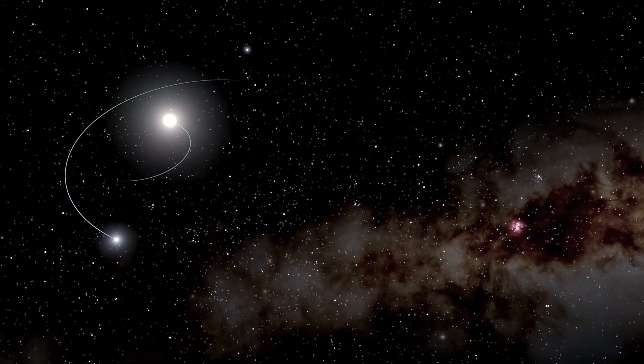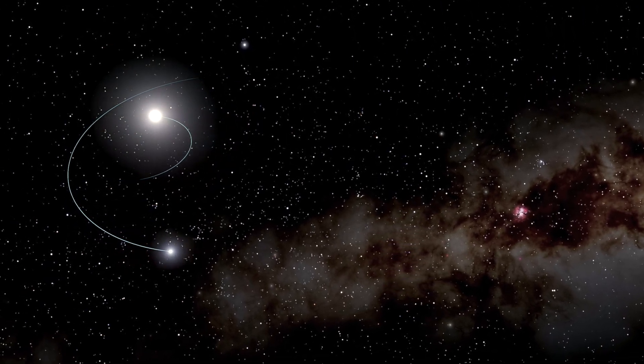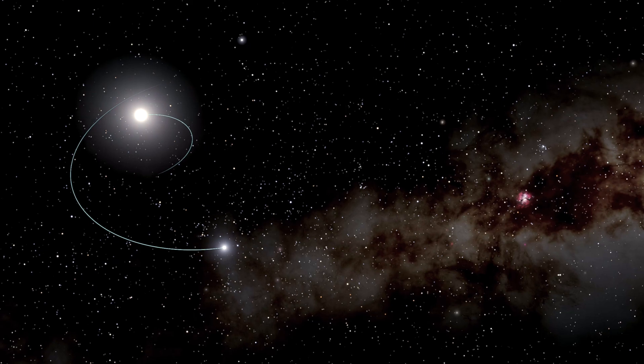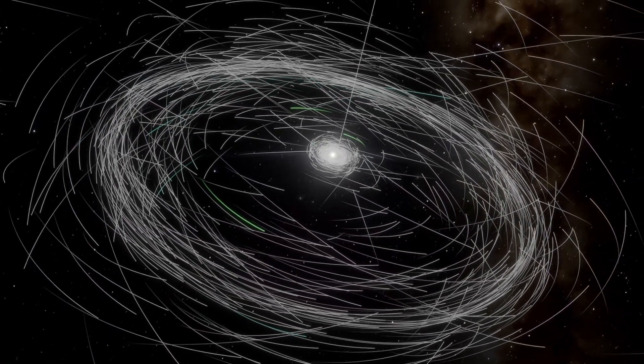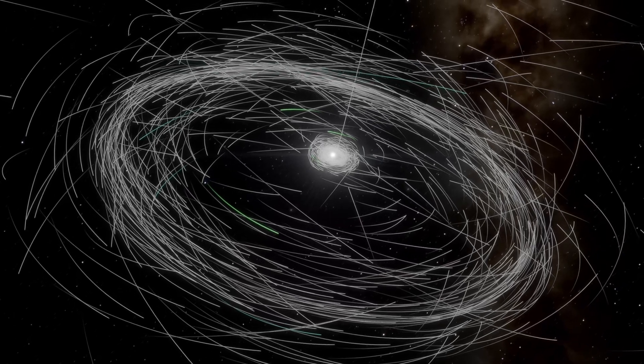Unproven, but possible. And maybe, just maybe, the outer edges of our solar system still carry its fingerprints. Because even if Nemesis is long gone, it might have shaped everything we see.